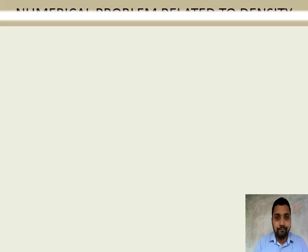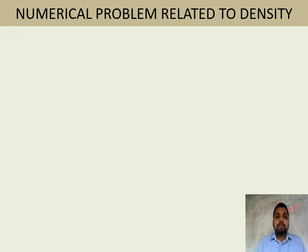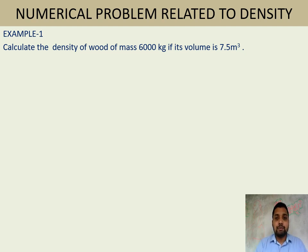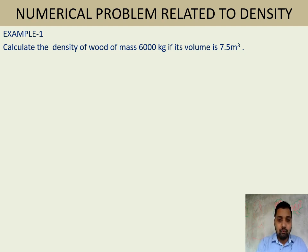First example: Calculate the density of wood of mass 6000 kg if its volume is 7.5 m³. Two quantities are given to us — first, the mass: mass = 6000 kg.